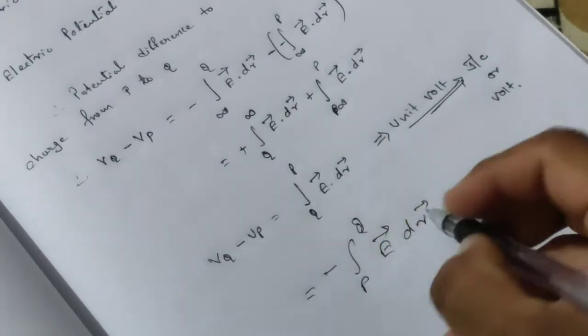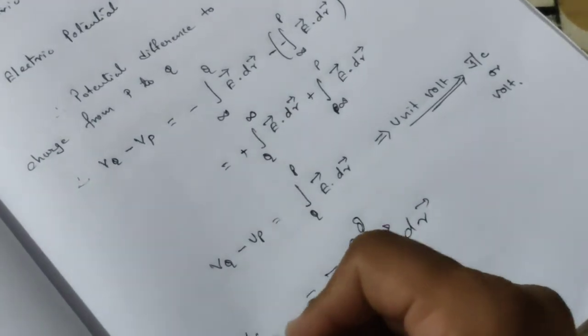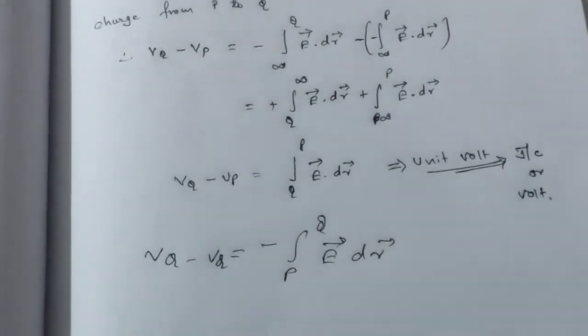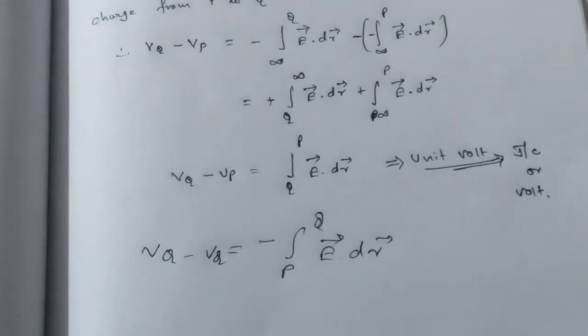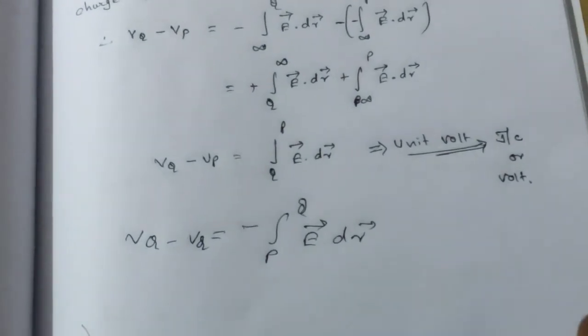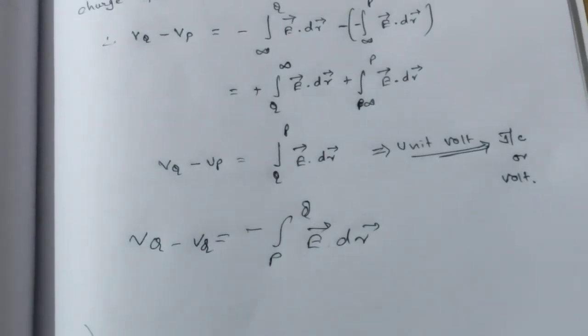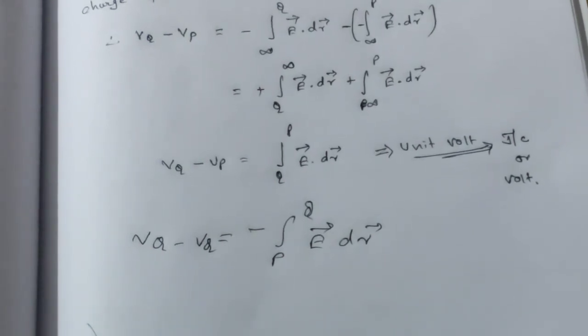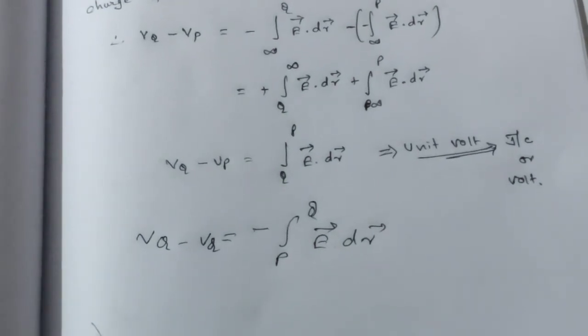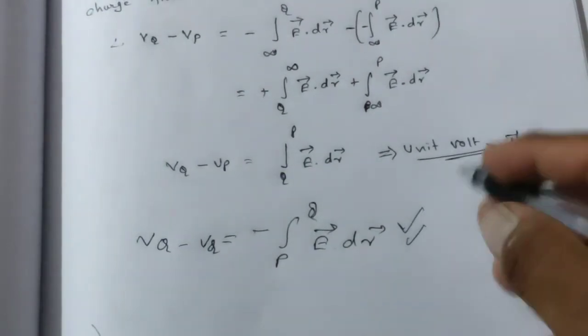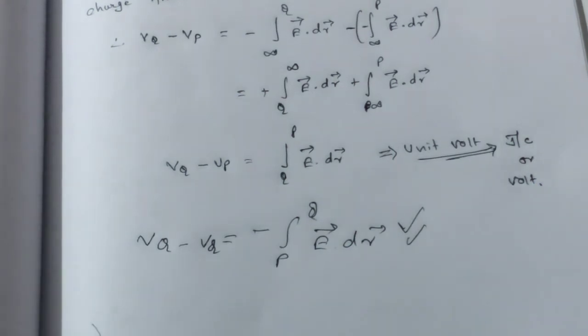This is electrostatic potential difference, also known as voltage. This voltage we use in electronic circuits, which we will see later. Its unit is joule per coulomb or volt.